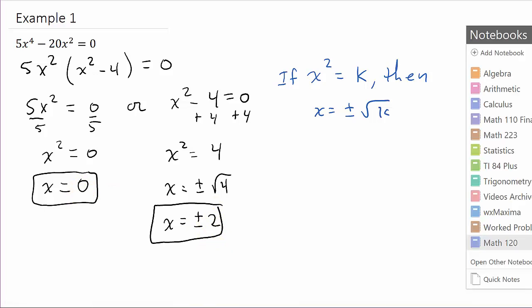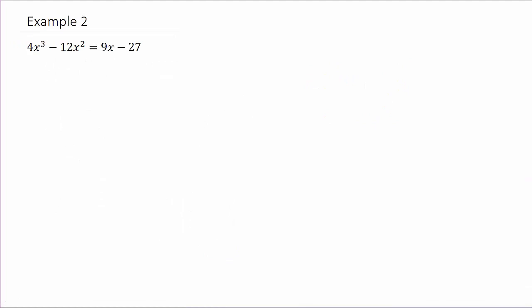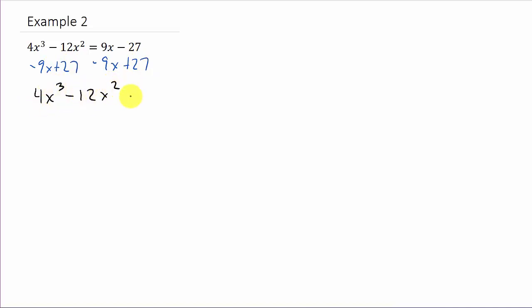Let's take a look at the next one. The first thing we want to do is get everything on one side and set it equal to zero. So I'm going to subtract 9x from both sides and add 27 to both sides. That gives me 4x cubed minus 12x squared minus 9x plus 27 equals zero.